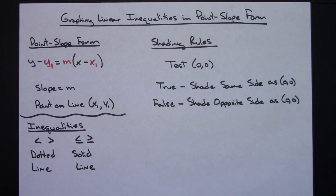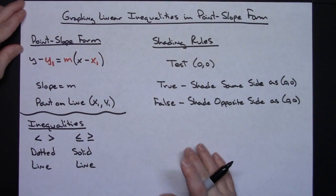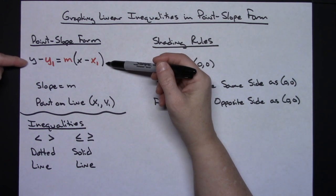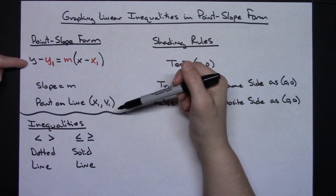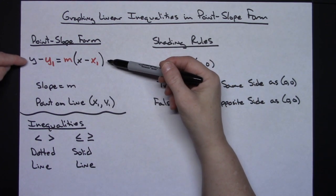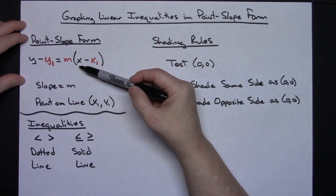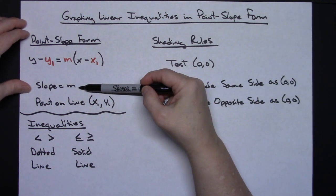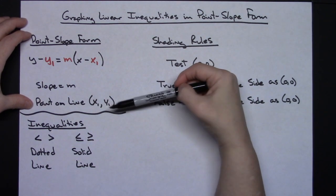In this video we're going to be looking at graphing linear inequalities in point-slope form. First, let's take a look at the formula. Point-slope form of an equation is y minus y1 equals m times the quantity x minus x1. The m is your slope, and x-sub-1 and y-sub-1 represent a point on the line.